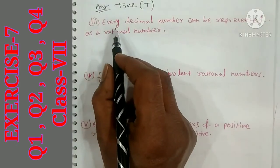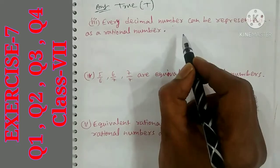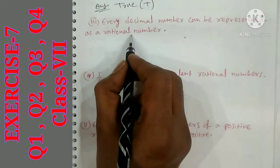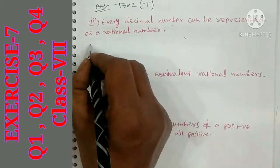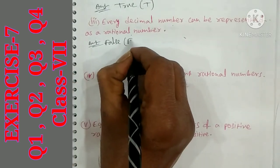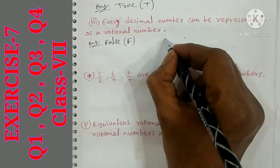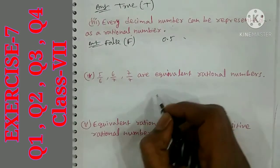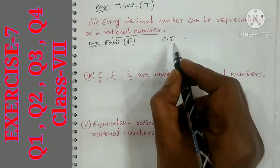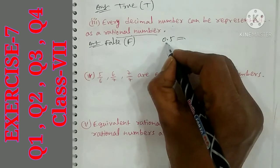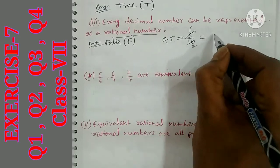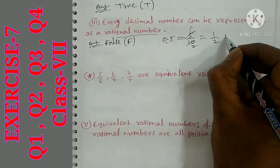Statement 3: every decimal number can be represented as a rational number. This answer is true. For example, 0.5 is a decimal number. 0.5 equals 5 by 10, which simplifies to 1 by 2 by cancellation. So it is a rational number.